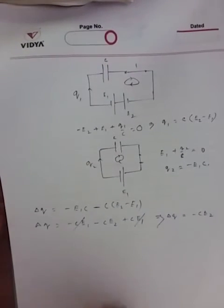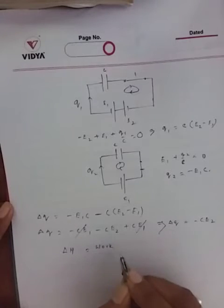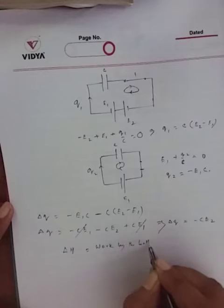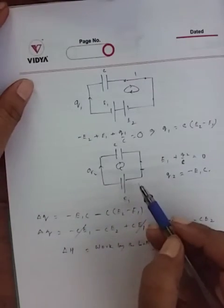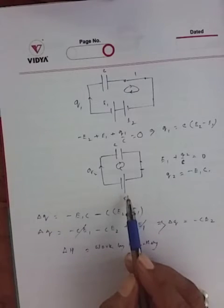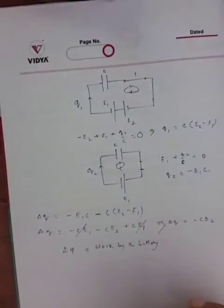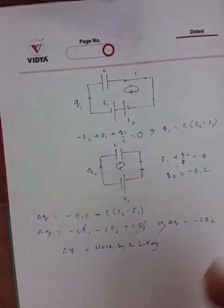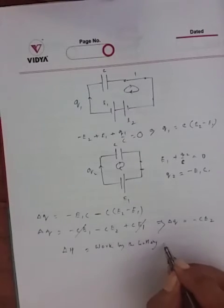The heat generation will equal the work done by the battery. After changing the arrangement, only E1 remains in the circuit. The additional charge rearrangement during the process of switching means only E1 comes into play — the difference in charge passes through E1 only.